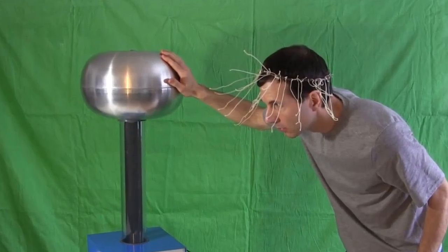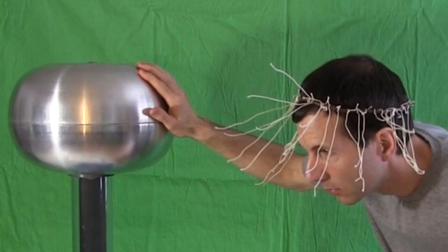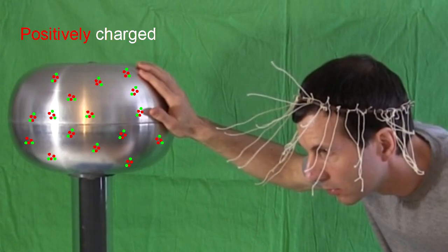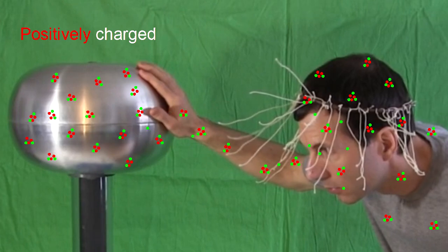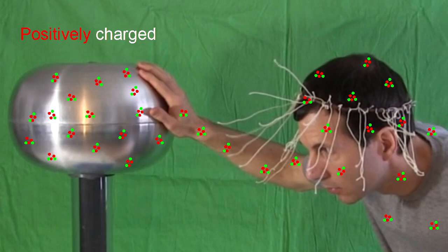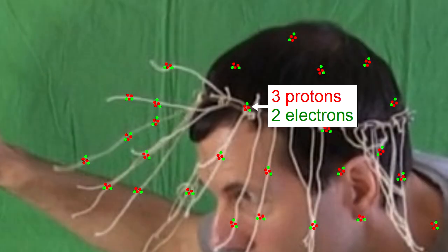So how does this work? Your skin is not a great electrical conductor but it does conduct some electricity. Since you're touching the dome you're basically a part of it. If the dome is positively charged then you become positively charged. Electrons are taken away from you and your hair by the Van de Graaff generator. That means your hair now has more protons than electrons. It's positively charged.